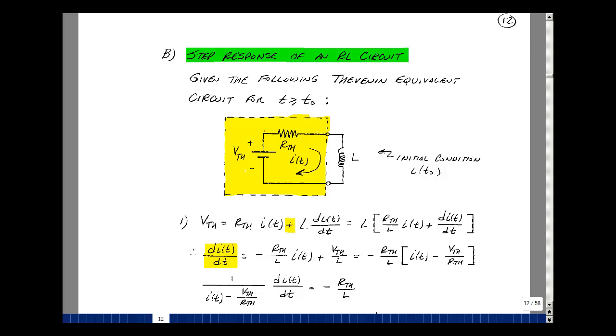Suppose that we have a linear circuit with only one inductance. Furthermore, let's assume that we also have a switch that's changed state at T equals T0. And with the inductance, we also have an initial condition, and this is the current.